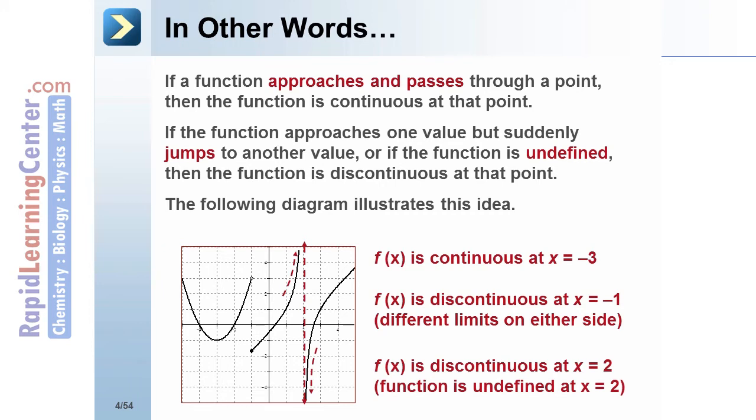Lastly, let's look at x = 2. Again, the function is not defined at that point. Do you see the vertical asymptote? So the function is discontinuous at x = 2.